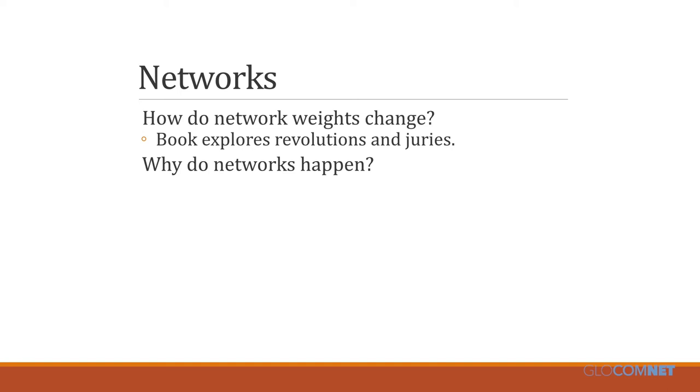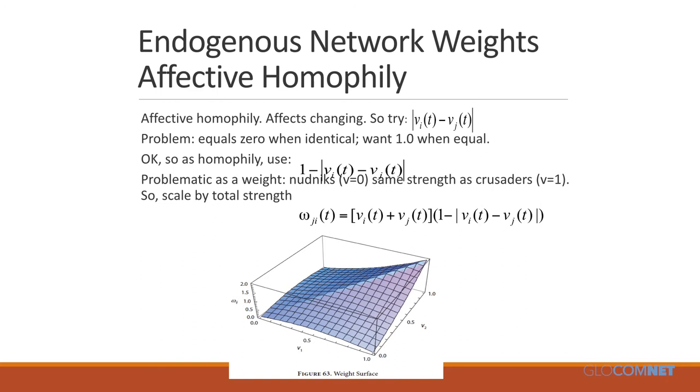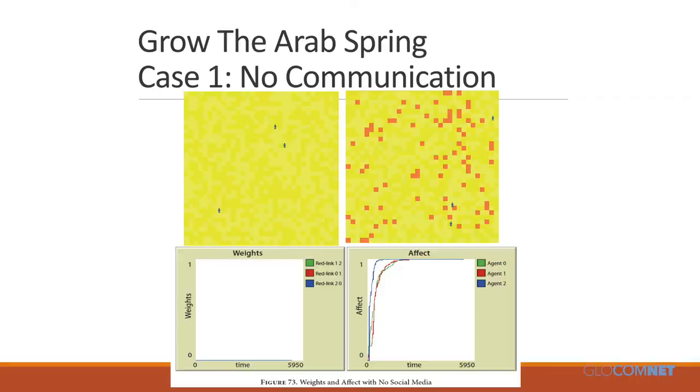Why do networks happen at all? One thought: make them happen because of affective homophily — they happen because people feel similarly about something. Trying just the difference in affective level doesn't work: it equals zero when they're identical and strong. Taking one minus that is also problematic: two people with zero passion have the same strength as two crusaders with passion one. So let's try strength-scaled homophily, and when you do that you can generate networks and powerful alliances.